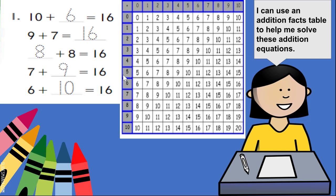Now, let's try 8 plus 8. Here we are with 8. If we start with 8, we count onwards 8 more places. 9, 10, 11, 12, 13, 14, 15, 16. So, 8 plus 8 is 16. 10 plus 6 is 16. 9 plus 7 is 16. 8 plus 8 is 16.